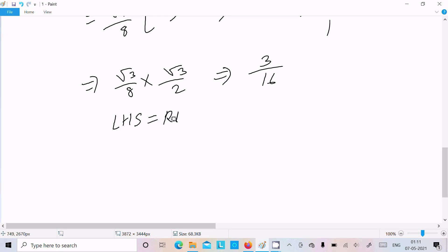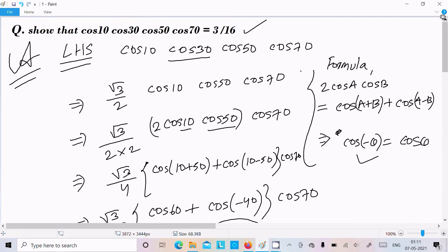LHS equal to RHS equal to 3 by 16. It's proved. So one more time going to repeat: cos30 value we know, so put that here. cos30 value, get the pair, multiply numerator denominator by 2, remember this formula.